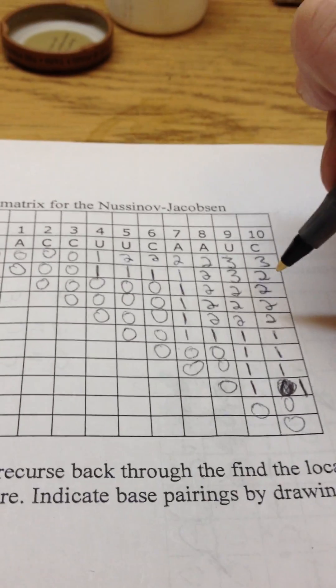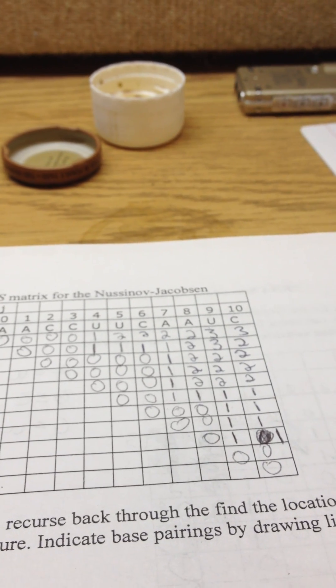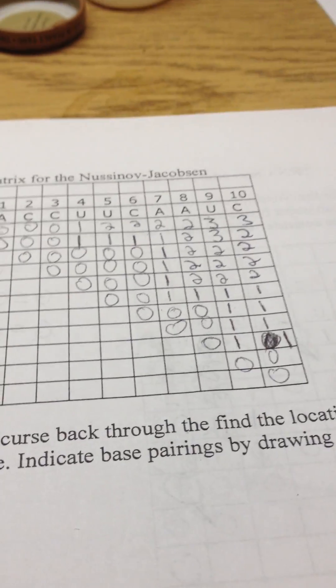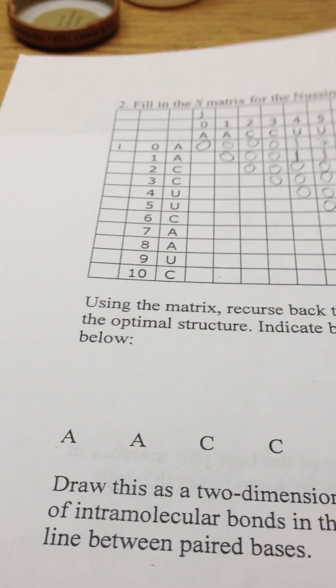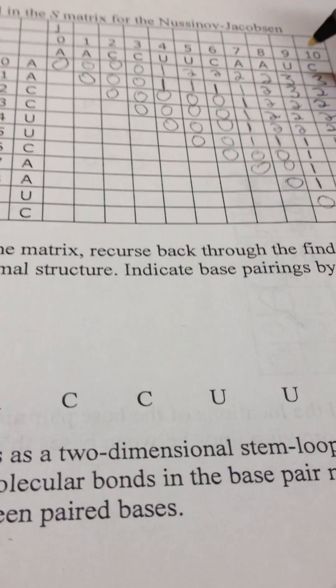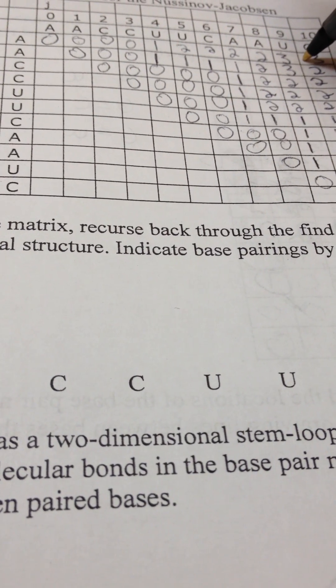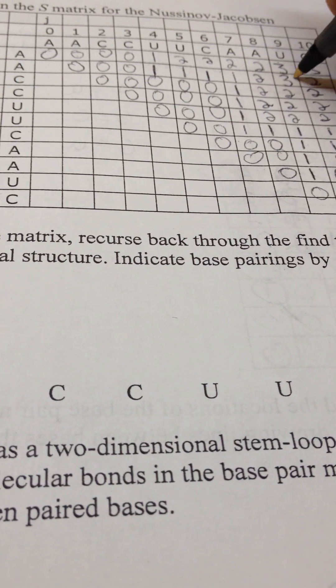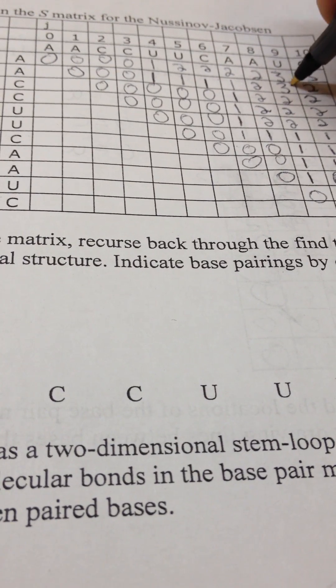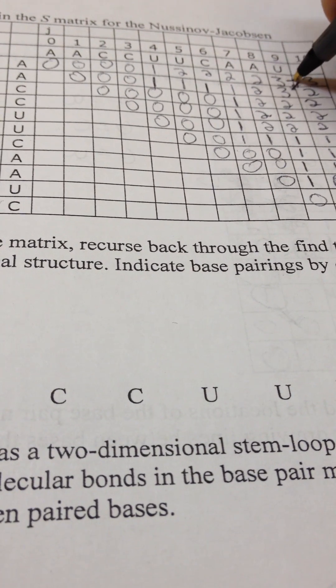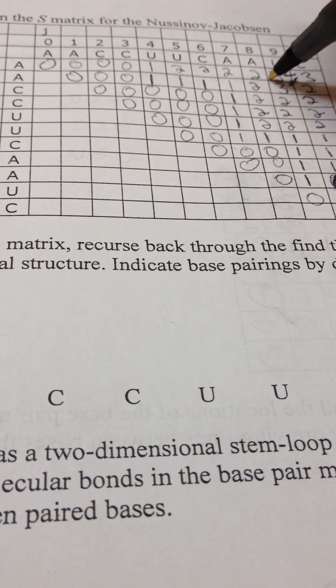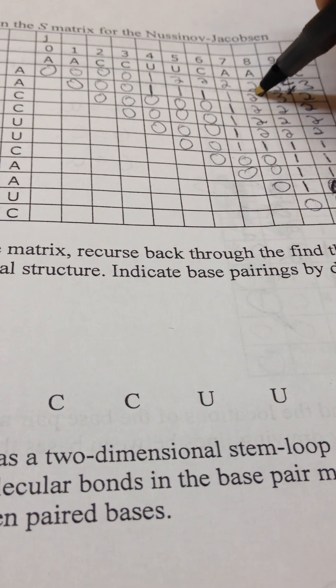And now we can recurse back and find the base pairs that match in the optimal structure. That is done by tracing our steps backwards. So we can probably trace this three to this because it's diagonal, but we didn't add one. So since it's a mismatch we go down to this three. Since U to A is a match, we can go down to this two because that's where we got it from.